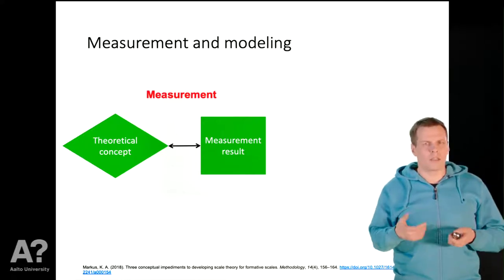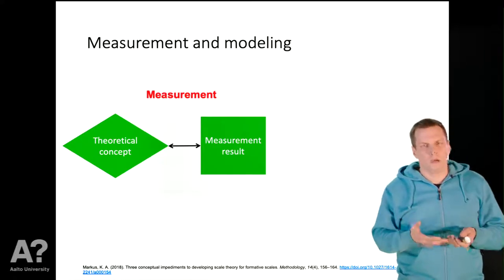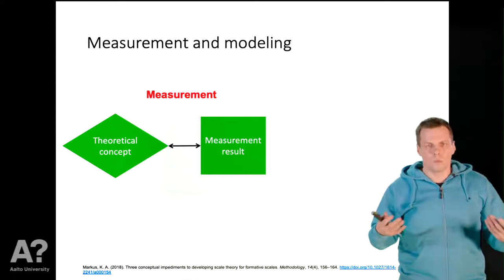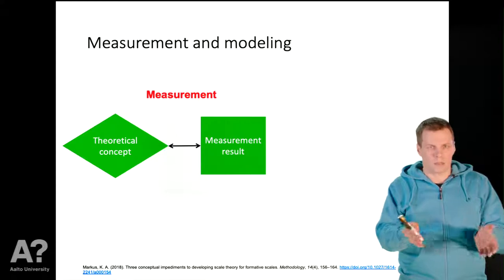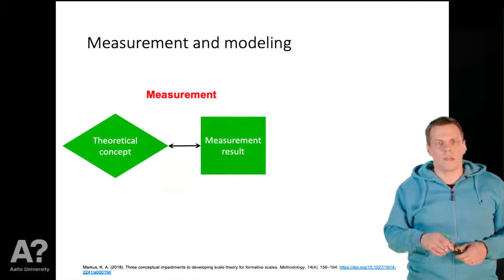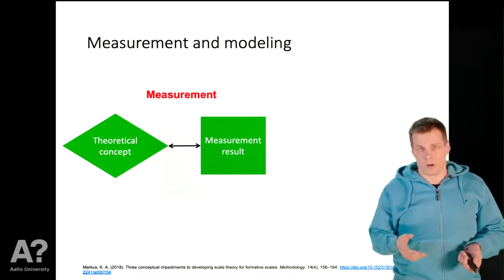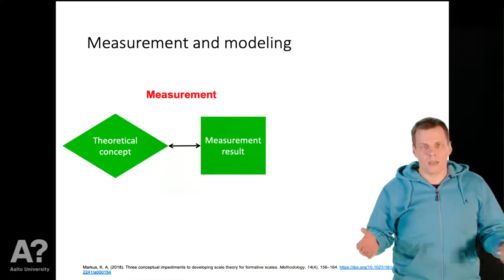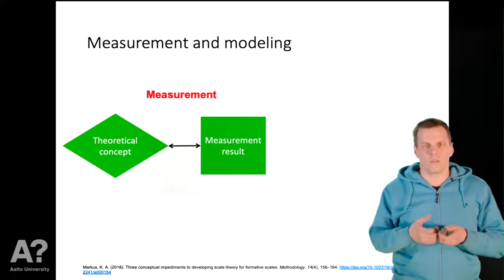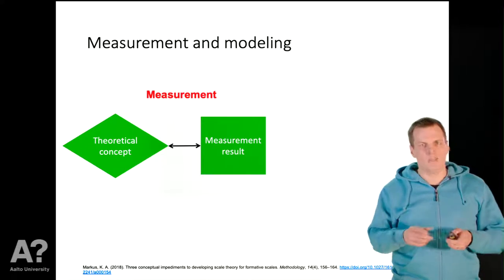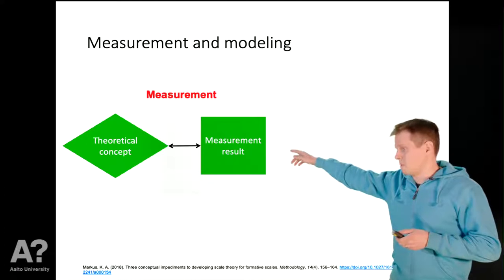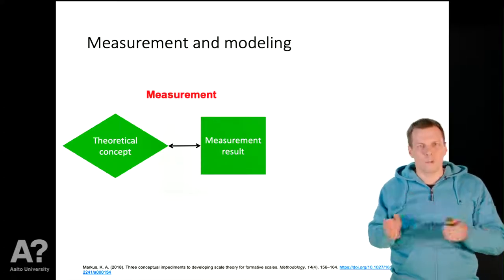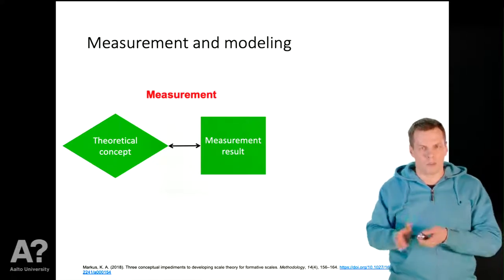Let's look at why formative measurement is troublesome. Taking multiple indicators of different things and making an index is not inherently problematic. Stock indices, for example, are made that way — individual stocks are not highly correlated, yet summing them produces a good measure of overall market performance. The problem is attaching the idea of measurement to these summed indicators. The idea of measurement requires some statistical association between the measurement result and the theoretical concept, traditionally with the concept's variation causing variation in the measurement result.